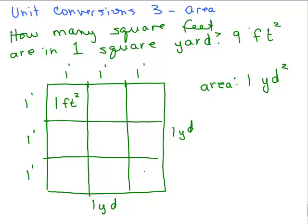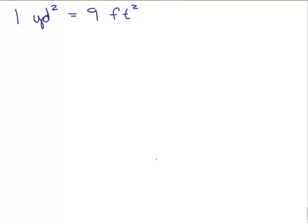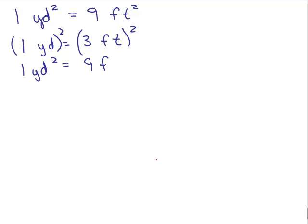Now you don't want to have to draw a picture each time, so let's move on. We found out that one square yard equals nine square feet. What's another way we could have gotten that without drawing a picture? We know that one yard equals three feet, so we could square both sides — because these two things are equal — and that says one square yard equals nine square feet. So there's another way of getting it.